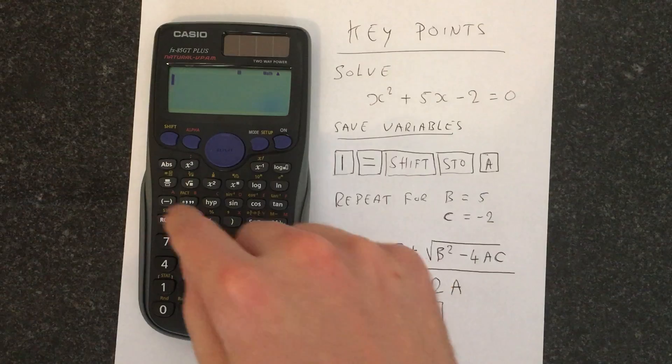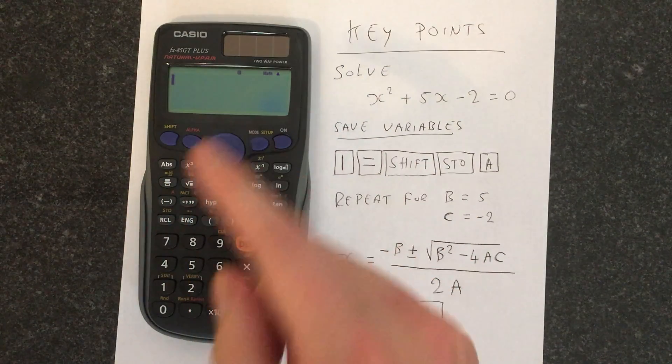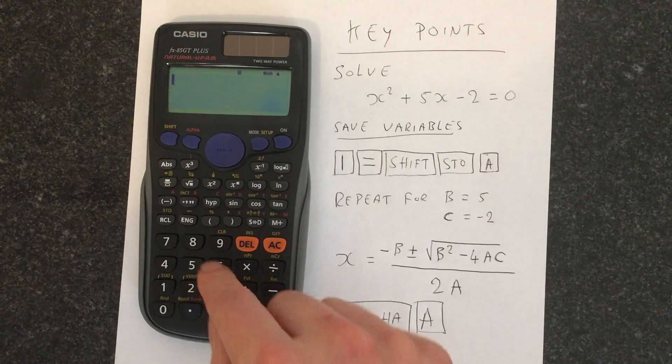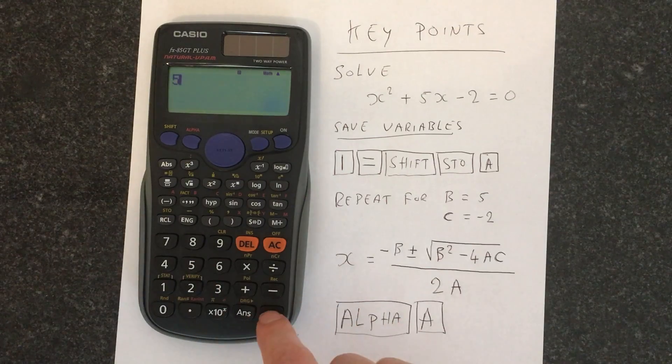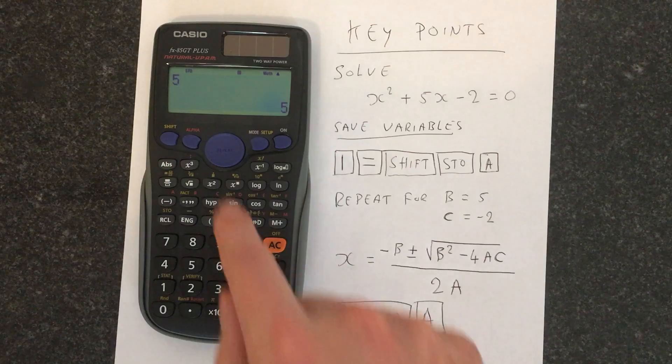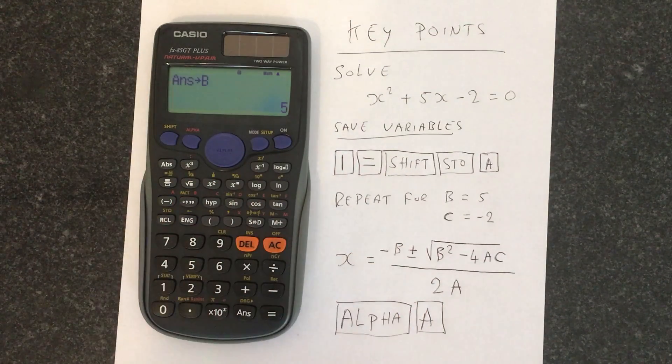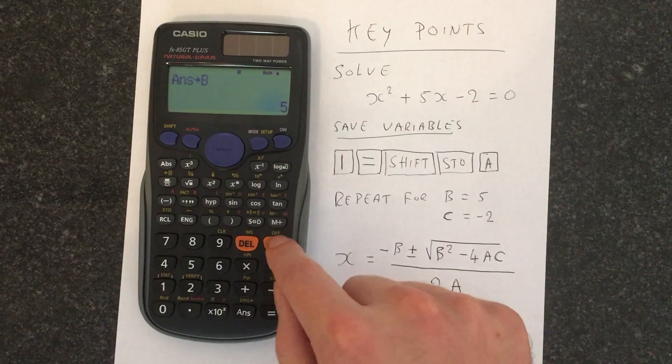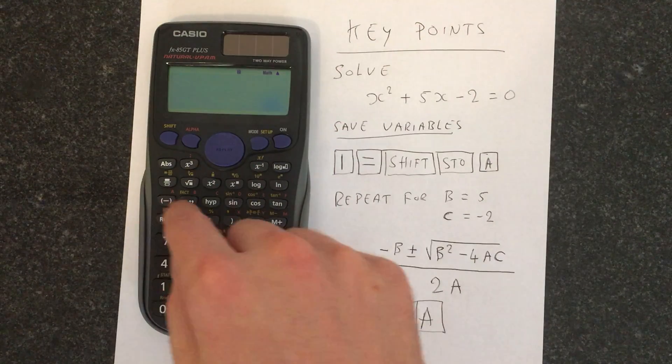So let's clear that. Then we're going to do the same thing for b. So we're going to do 5 equals shift, the thing just above the 7, that's activated STO. Then we press b, that's now into b, and I'm just pressing AC to get rid of that.